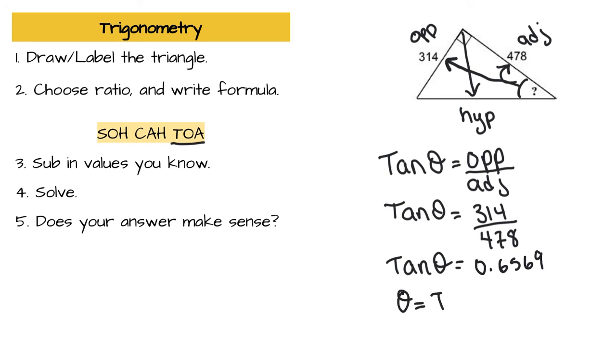So we're going to take the inverse tan of 0.6569, which makes theta equal to 33.3 degrees. And we'll round to the nearest degree, so that makes theta equal to 33 degrees.